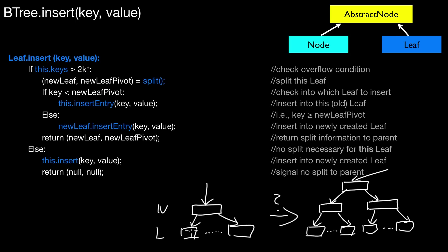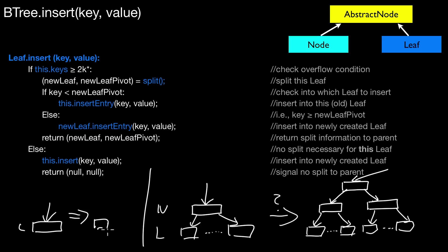In any other insert situation, the B-tree only increases its width — more leaves or nodes on an existing level. Adding another level only happens when the old root node is split. Note that a root may also be a leaf: if you start with just a single leaf and it overflows, you end up with two leaves and one node, and the root pointer now points to that node. Starting from one level you end up with two levels; starting from two levels you end up with three.